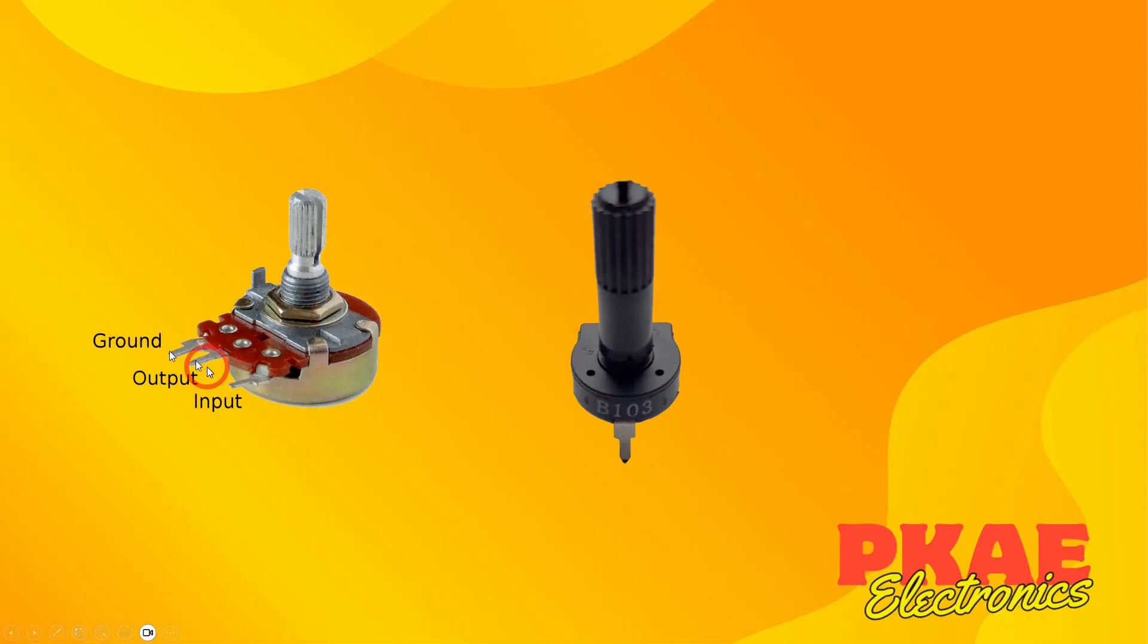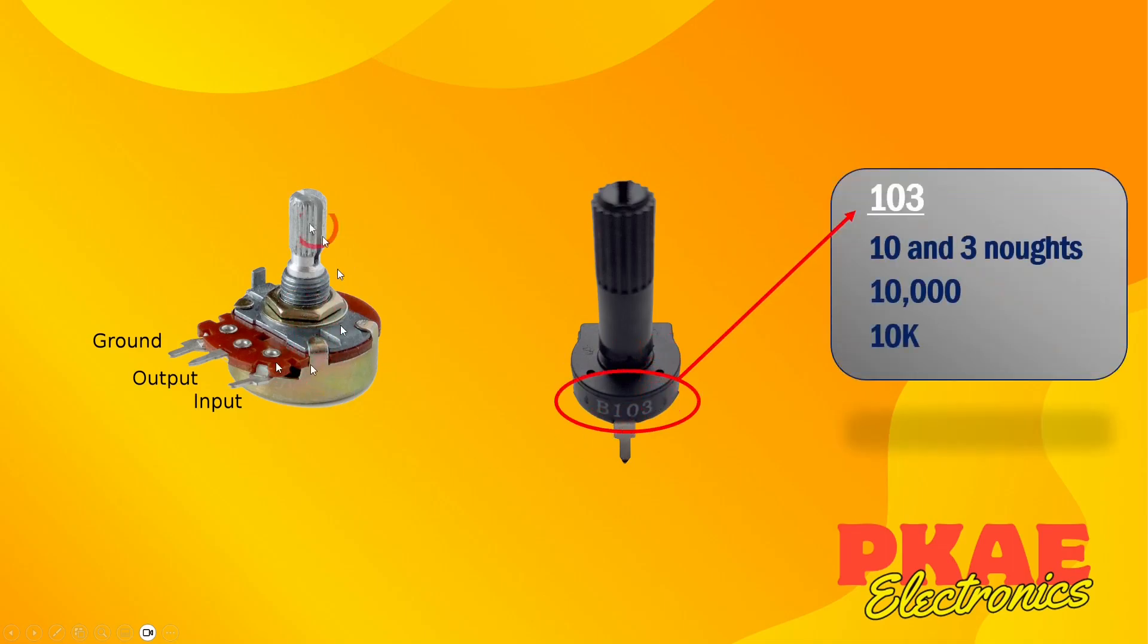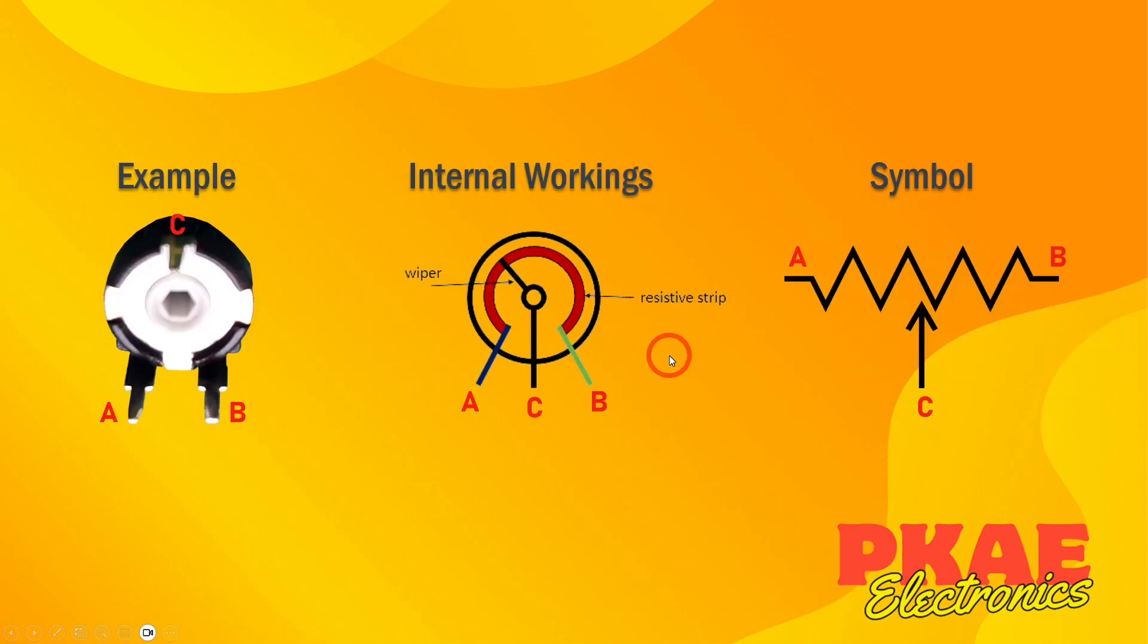Right, potentiometers then. There's many types that you will find. These are very common, they come in a lot of the kits that you might buy. This is another type, kind of a plastic version. This number here, this B103, that indicates the total resistance value of this potentiometer. So the 10 indicates 10, and the 3 indicates that you add 3 noughts on the end. So that's a 10k potentiometer.